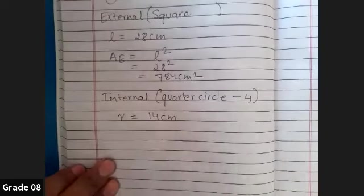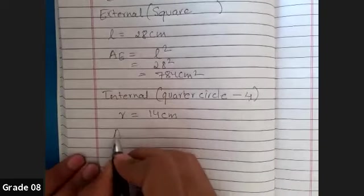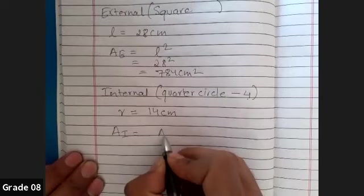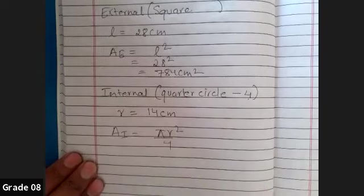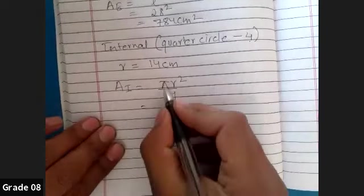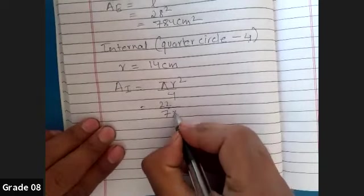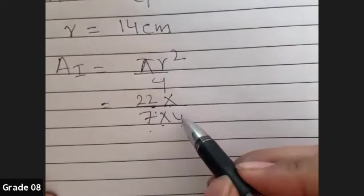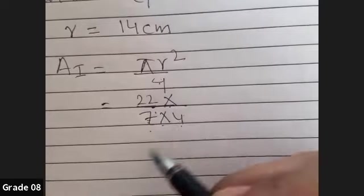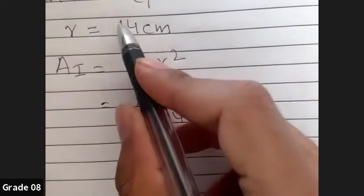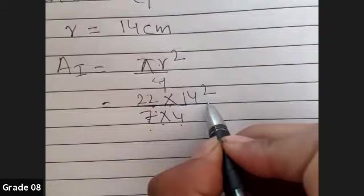Now I'm going to find the area of one quarter circle. The area of a quarter circle is pi r squared divided by 4. Pi means 22 over 7. The 7 in the denominator combines with the 4 already there, and the radius is 14 centimeters. So we write 22 over 7, multiplied by 14 squared, all divided by 4.